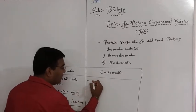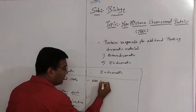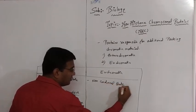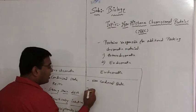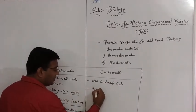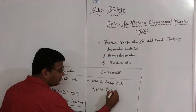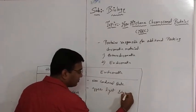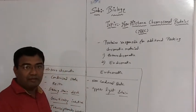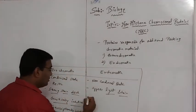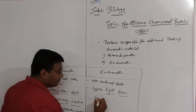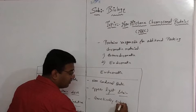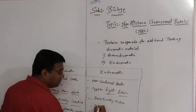Euchromatin, on the other hand, are generally in a non-condensed state. Therefore they generally appear light instead of dark — they appear in a lighter state. They are genetically active, and because they are genetically active we also say they are transcriptionally active.